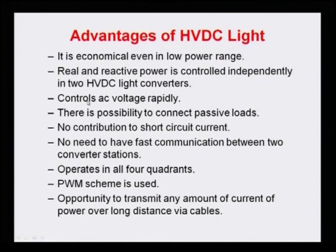Another advantage is that HVDC VSC converters can control AC voltage much more rapidly compared to conventional HVDC. The conventional system uses line-commutated converters which are inherently slow. VSC-based HVDC controls AC voltage up to 20 times faster than conventional HVDC transmission systems.